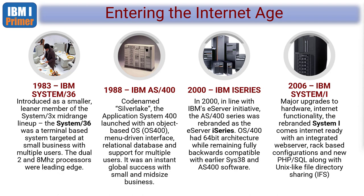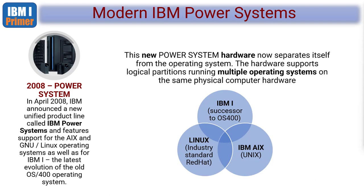With a new major evolution just around the corner, the System i was really a last hurrah for the venerable AS400 line. Then, 2008 saw the introduction of the Power System. The Power System is the hardware, and the big step here is completely new hardware — ranging from huge mainframe-sized super-powerful machines down to small rack-mounted machines you put in your server room next to a Windows server.